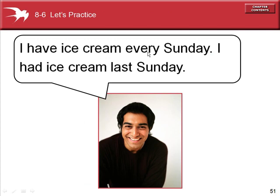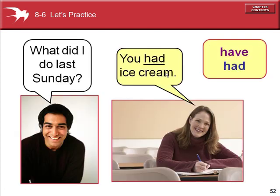I have ice cream every Sunday. I had ice cream last Sunday. Present tense is used for habitual actions. Past tense is used to show the action was completed in the past — last Sunday is the past. What did I do last Sunday? You had ice cream. Past tense.